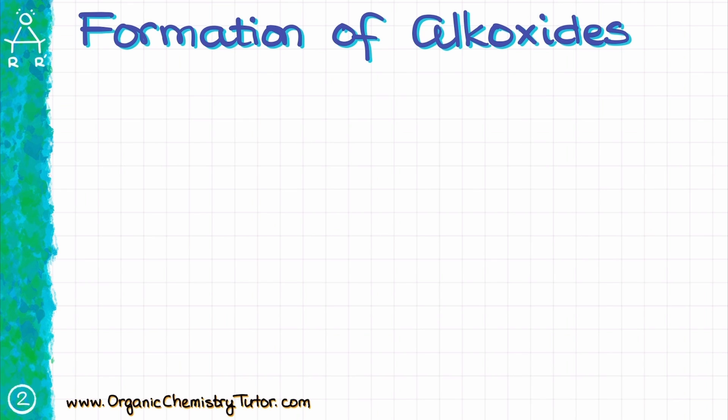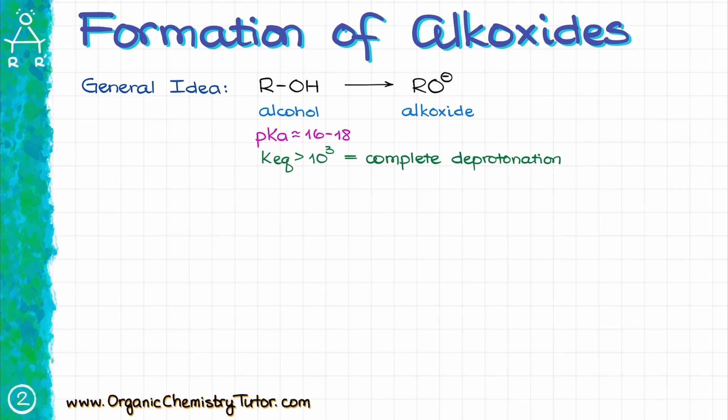And the first problem that you are going to face during the test is the formation of said alkoxides. Typically, we would want to make alkoxides from the corresponding alcohols. If I peek into my pKa table, I will see that the pKa of alcohols is somewhere around 16 to 18, which means that I need a sufficiently strong base to deprotonate my alcohol completely. If we say that we are looking for the equilibrium constant value somewhere around 10^3 or greater, this means that the pKa H value for our base needs to be greater than 21.